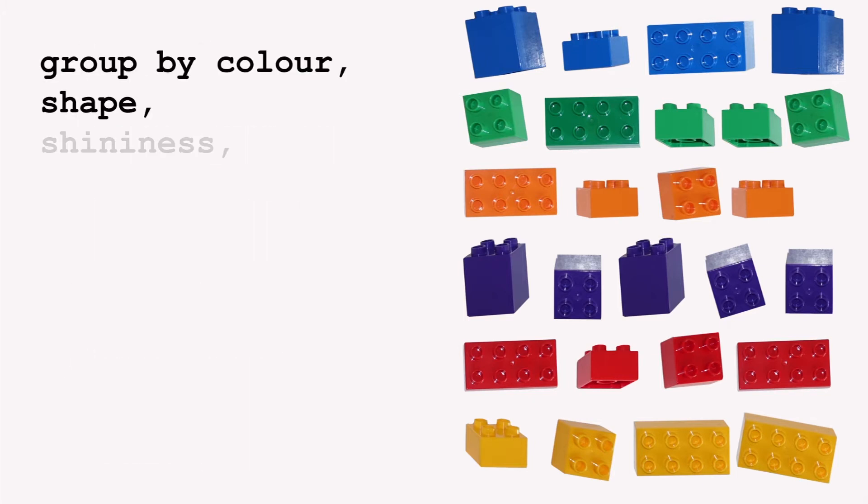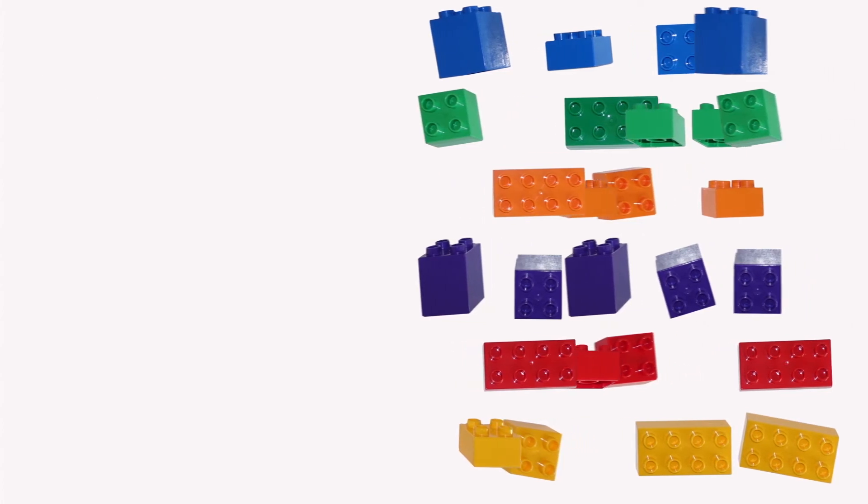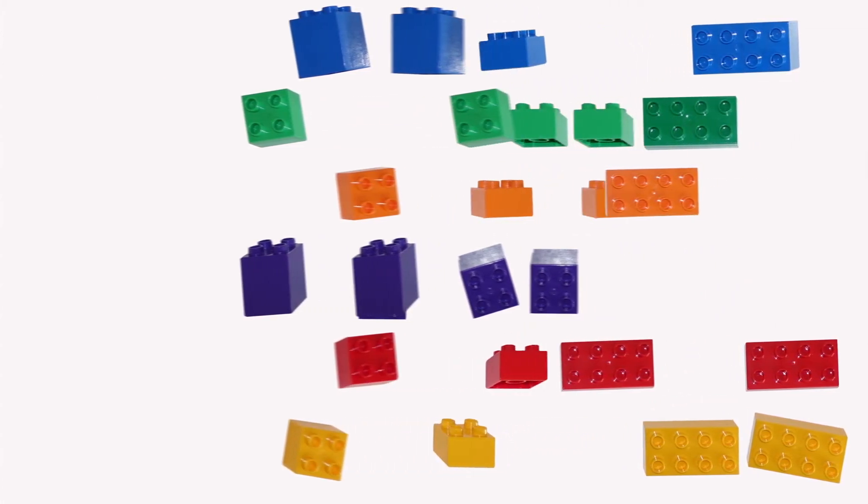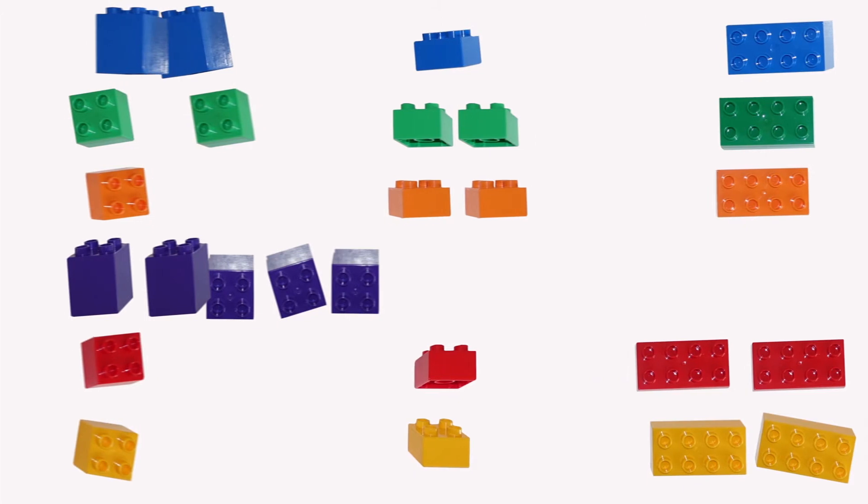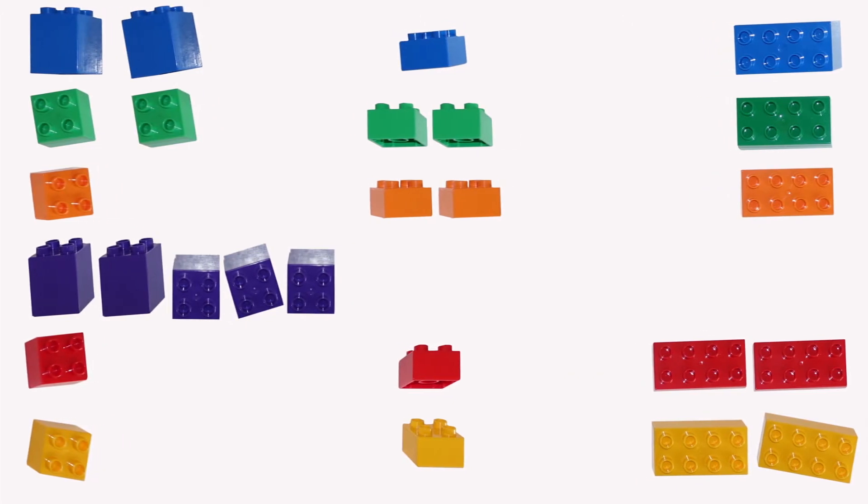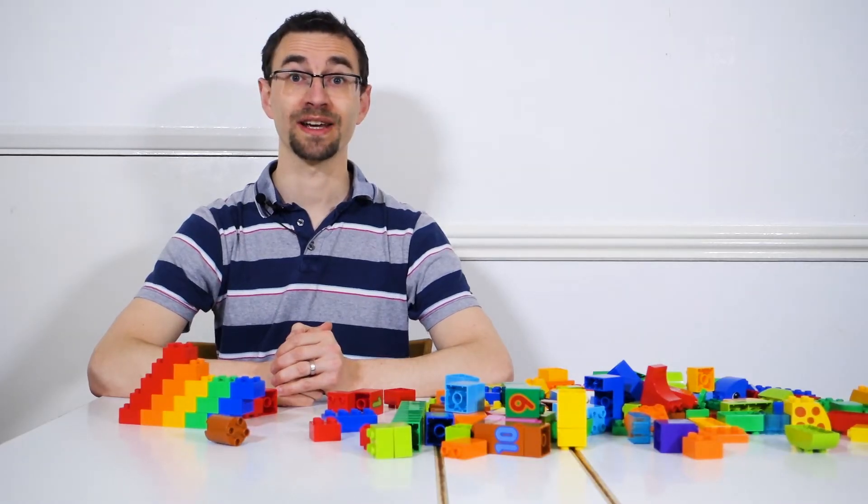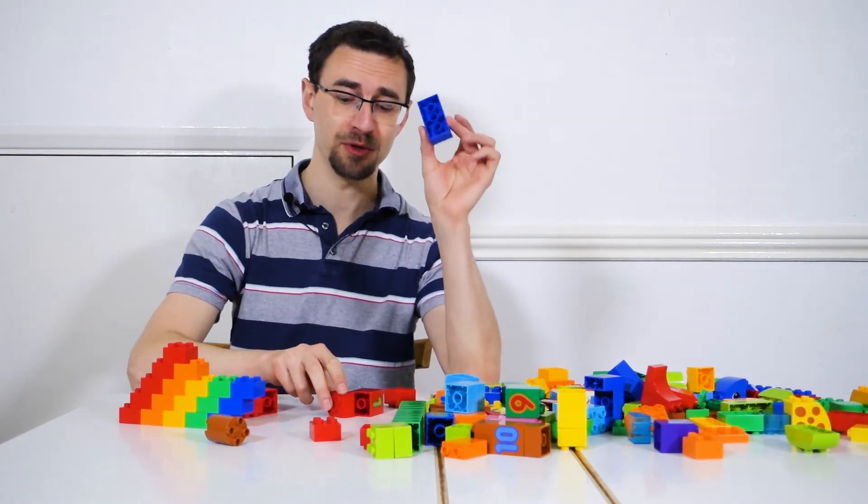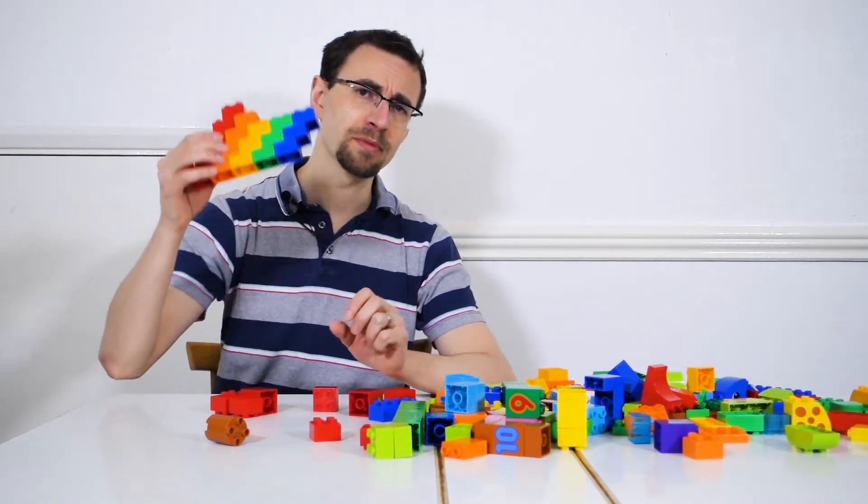You can group by as many columns or expressions as you want. Doing so further subdivides your results giving you the totals for each set of values in the table. This is great because I can check if I've got enough bricks of the correct shape and color to build my rainbow.